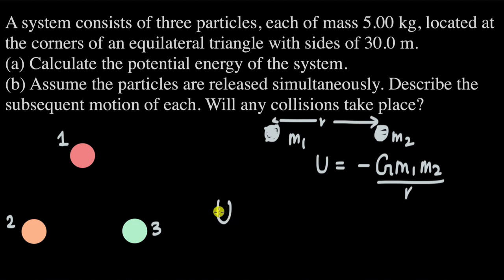So the U of the system equals the potential energy of the first and second mass, plus the potential energy of the second and third mass, plus the potential energy of the third and first mass.